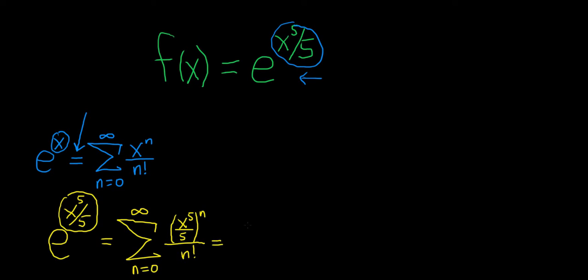Let's go ahead and keep going. This is equal to the infinite sum as n runs from 0 to infinity. And what you can do here is use properties of exponents. So basically, the n will get multiplied by the 5.